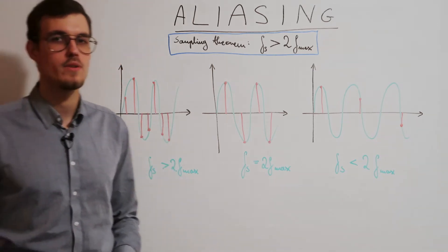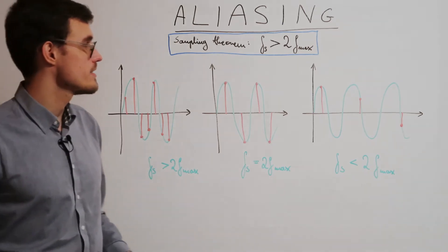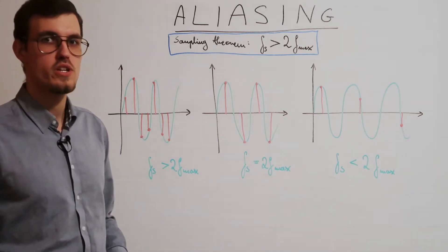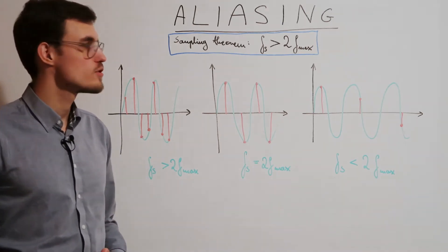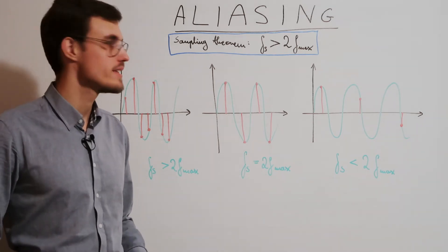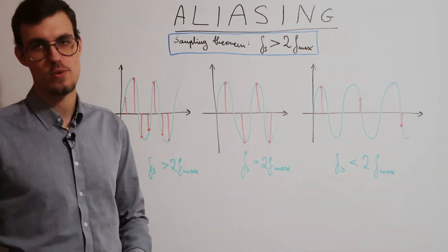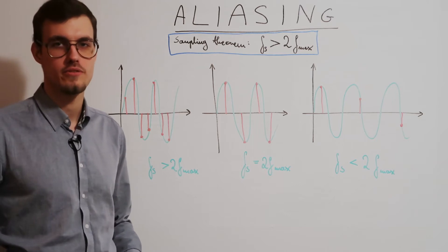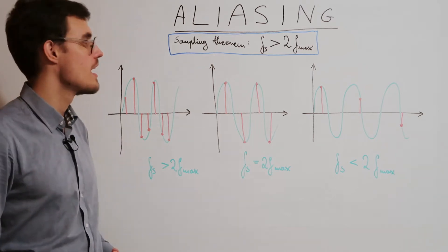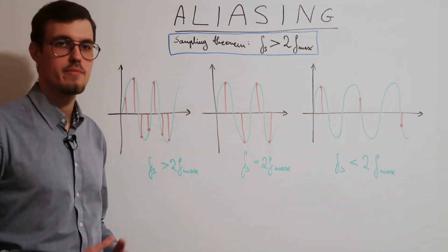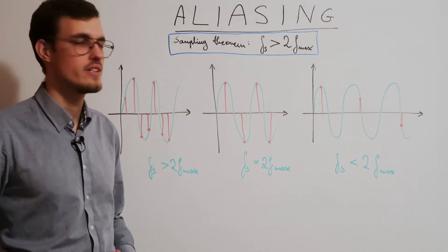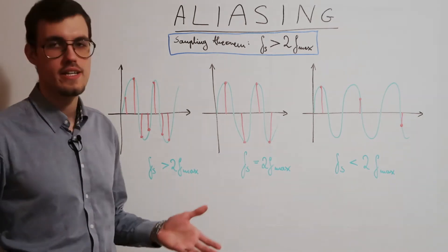Let's first do a quick recap of the sampling theorem. The sampling theorem says that we should take over twice as many samples per second as the highest frequency in the signal we observe. Let's look how the sample rate and the maximum frequency relation looks in these three cases.